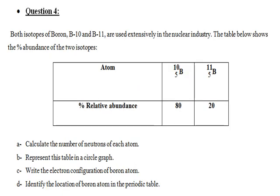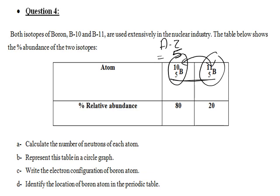Question 4: Both isotopes of boron, B-10 and B-11, are used in the nuclear industry. B-10 has atomic number 5, B-11 has atomic number 5 — same atomic number, different mass number. Percentage abundance: 80% for B-10 and 20% for B-11. Number of neutrons: B-10 has 10 minus 5 equals 5 neutrons; B-11 has 11 minus 5 equals 6 neutrons. To draw a circle graph, draw a circle of radius 4–6 cm.